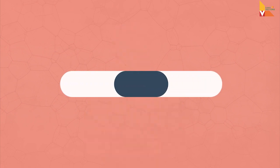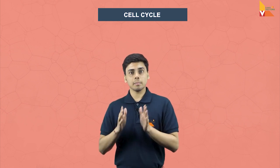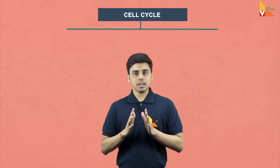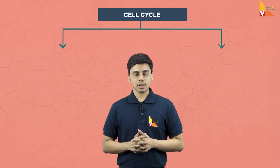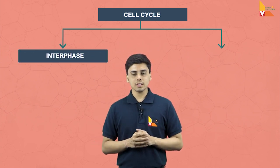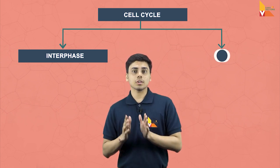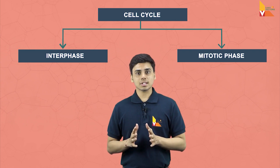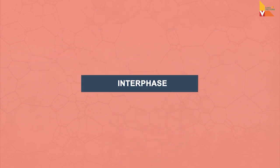Let's move on to our first subtopic of this chapter, and that is the cell cycle. Cell cycle is basically a sequence of events occurring in the life of a cell. We will discuss what these sequence of events are in coming sections. For now, let us first understand the phases of this cell cycle. There are two phases involved: interphase and the M phase, or the mitotic phase.